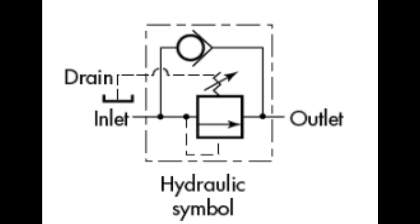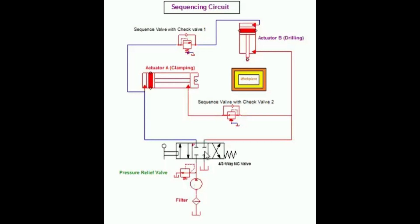The sequence valve has an external drain line. Therefore, a line must be connected from the sequence valve's drain port to the tank.